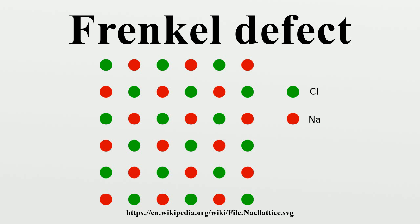Definition: A Frenkel defect, Frenkel pair, or Frenkel disorder is a type of point defect in a crystal lattice. The defect forms when an atom or smaller ion leaves its place in the lattice, creating a vacancy, and becomes an interstitial by lodging in a nearby location.